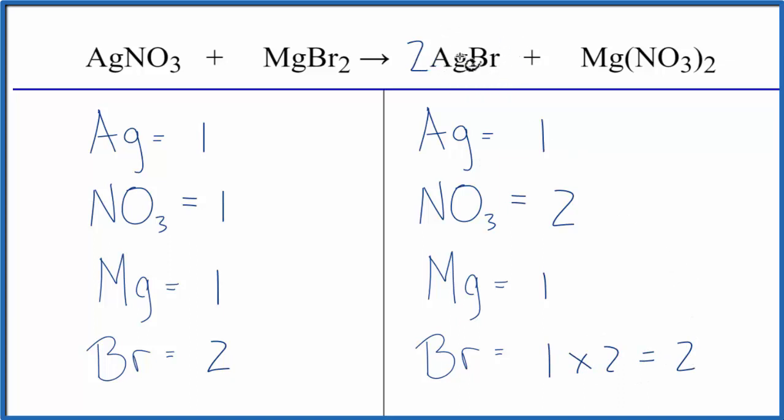But the 2 applies to everything. So 1 times 2, that gives us two silver atoms. So we only have one here, it'd be easy enough to put a 2 in front of the AgNO3, because 1 times 2, that would give us the two silvers, those would be balanced.